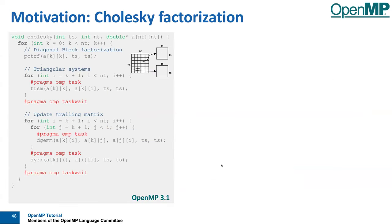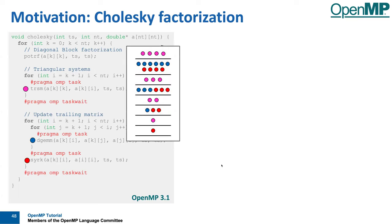Let me give you a fancier example: Cholesky factorization, more of an HPC algorithm. This is already a blocked version — all the operations are on matrix sub-blocks.